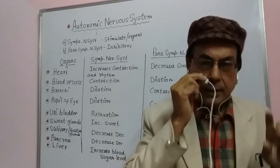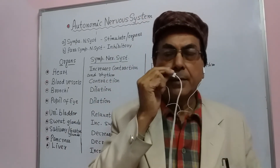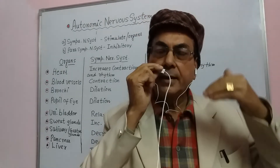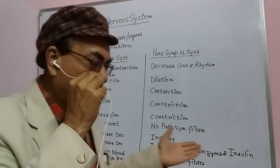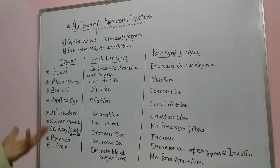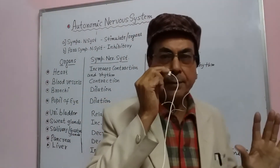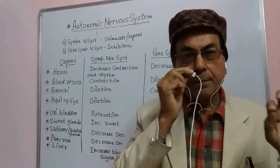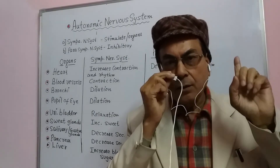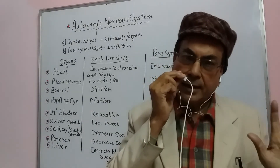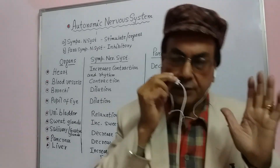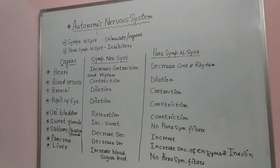In this way, we can say the autonomic nervous system plays a very important role in our body across different organs and glands. We have given some examples; similarly there are many more ways the autonomic nervous system functions — sympathetic and parasympathetic. In brief, if one is stimulatory, the other is inhibitory. This is all regarding the autonomic nervous system. Thank you very much.